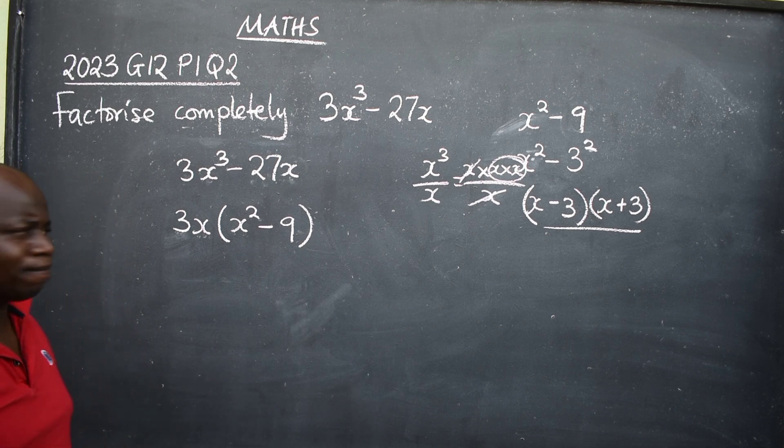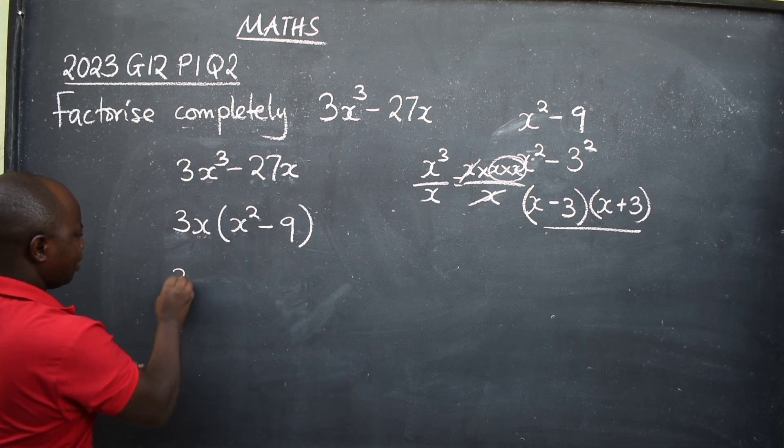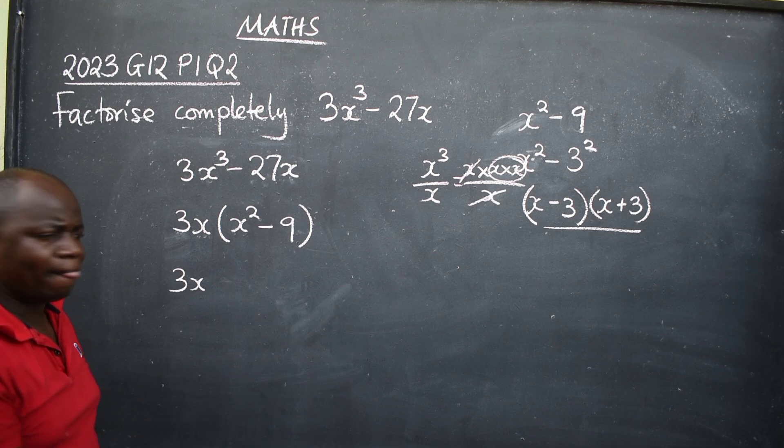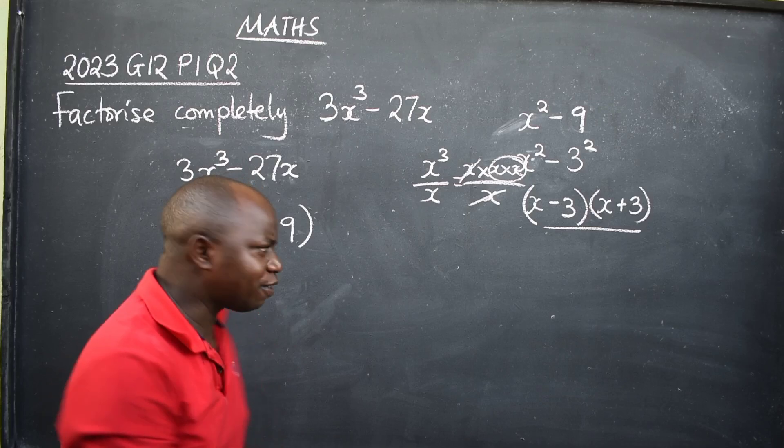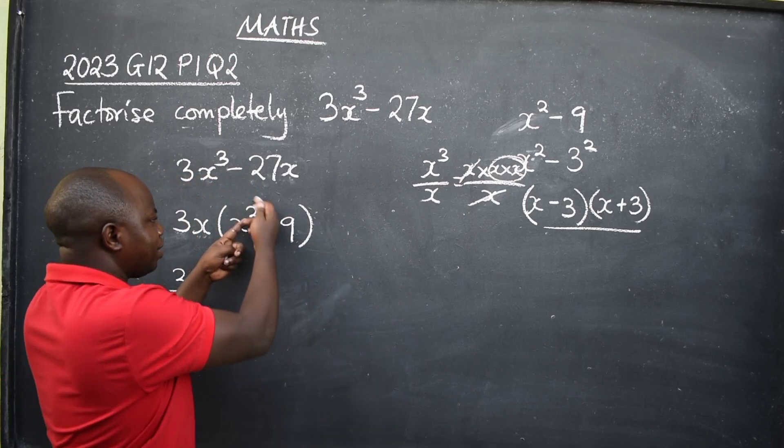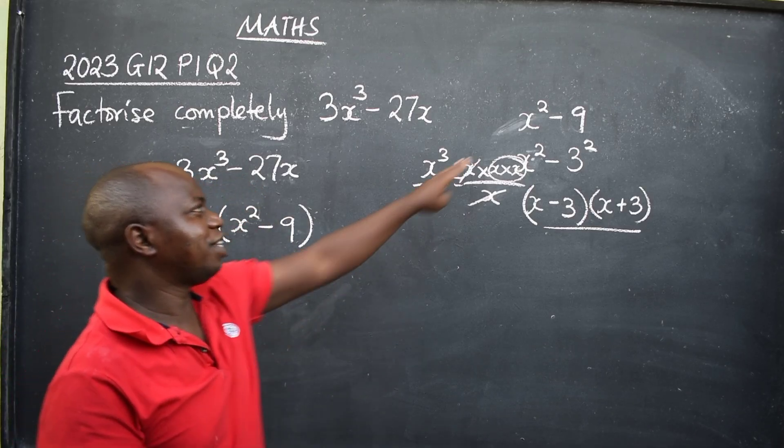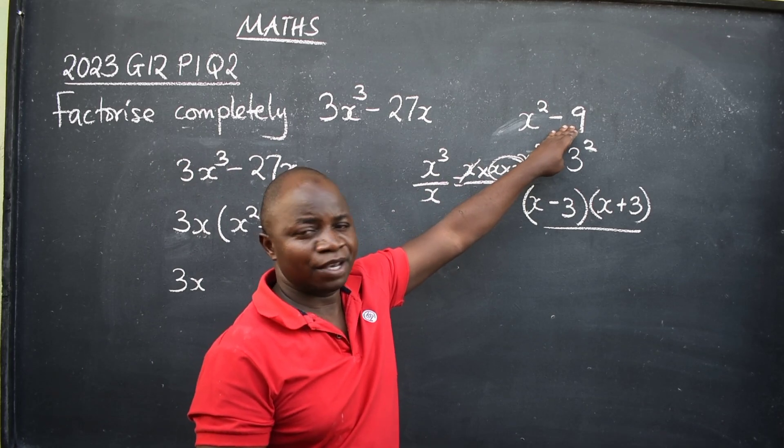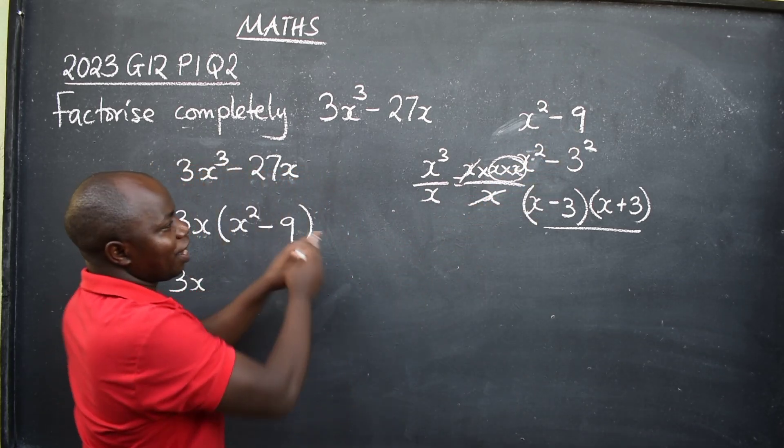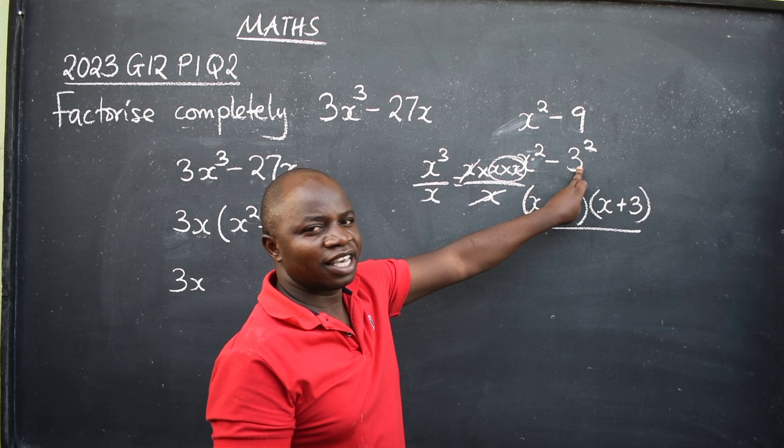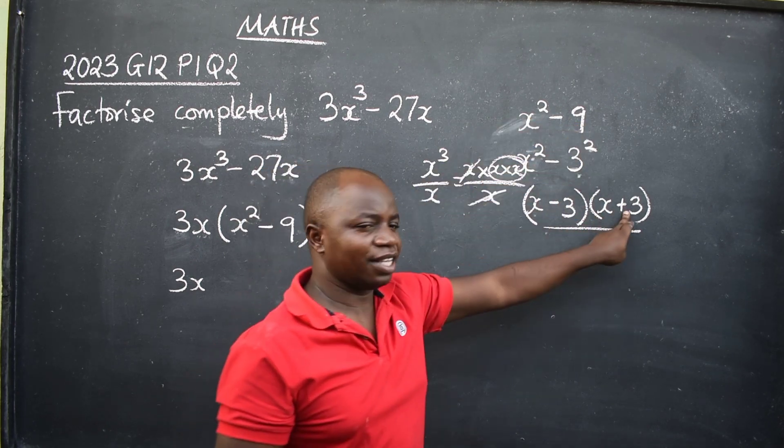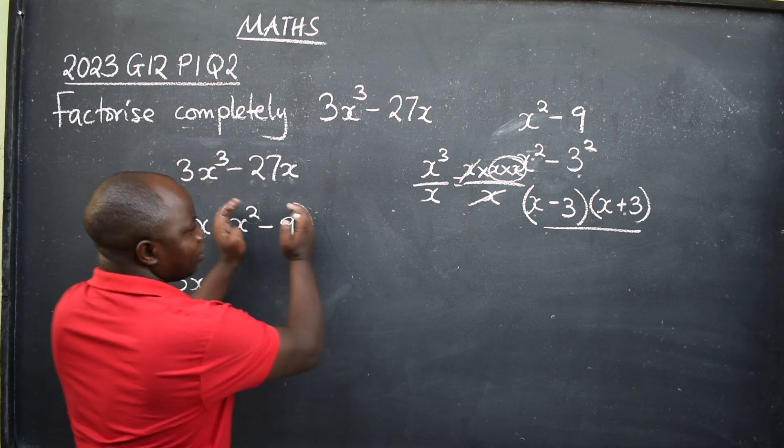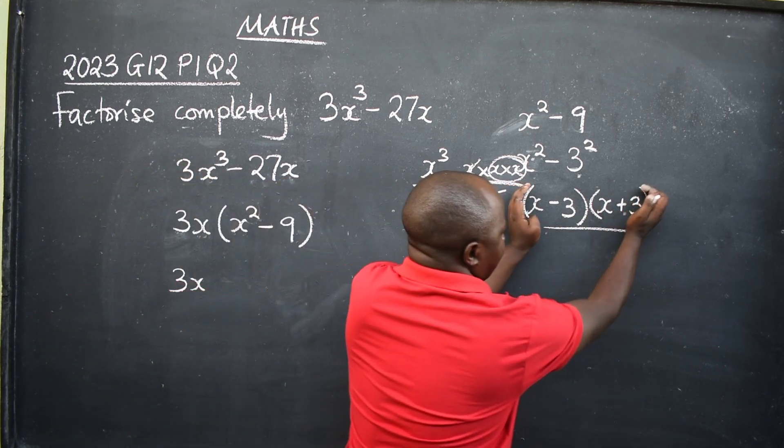You have this 3x here. What is inside here now is the difference of two squares, because 9 can be expressed as a square. When I express 9 as a square, I'm going to get 3 squared. I factorize this by ignoring the squares. Where there is this, you'll be able to replace with that.